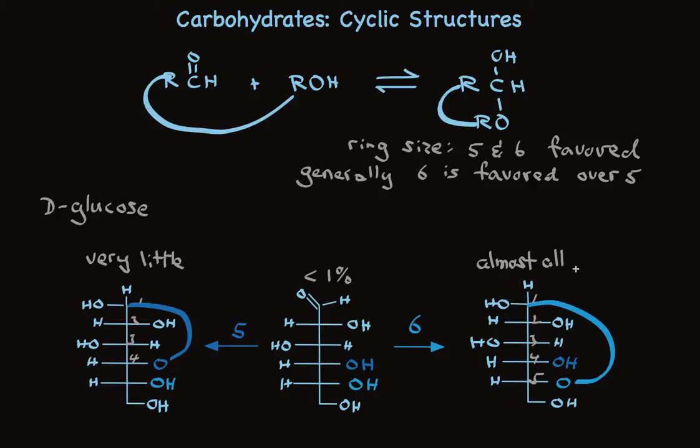But this doesn't tell us all we need to know yet. Take a look at that C1. This first carbon, the one that was a carbonyl group, is now a stereogenic center. And when the ring is closed, we can form two diastereomers. As if sugar stereochemistry weren't complex enough, we have to compound it by making another set of stereoisomers.